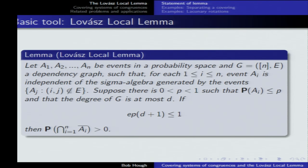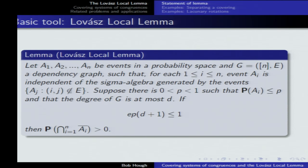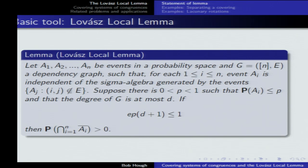There are a number of versions of the lemma that I'll state during my talk. This is the most basic one that's applied most often. So let A₁ through Aₙ be events in a probability space, and I assume that they have a dependency graph — a graph G with vertices the numbers 1 through N and edges between them — such that a given event Aᵢ is independent of the sigma algebra generated by the events Aⱼ such that i and j are not connected. That's the sense of locality.